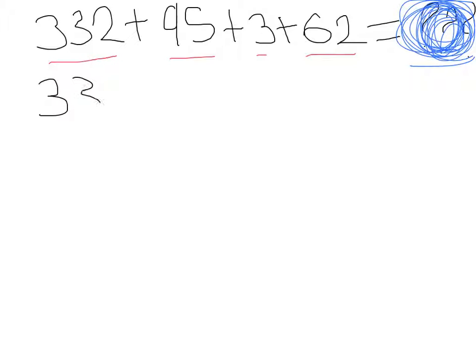Three hundred and thirty-two plus ninety-five equals... Let me work this out for a second. If I get this right, it should be four hundred and twenty-seven.